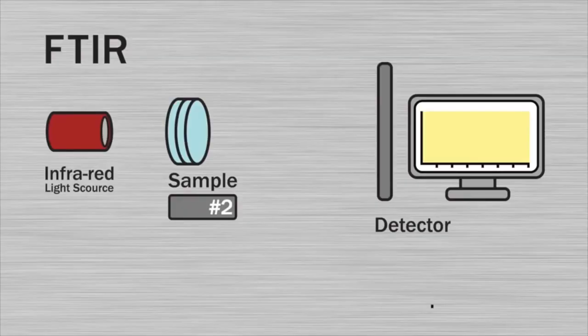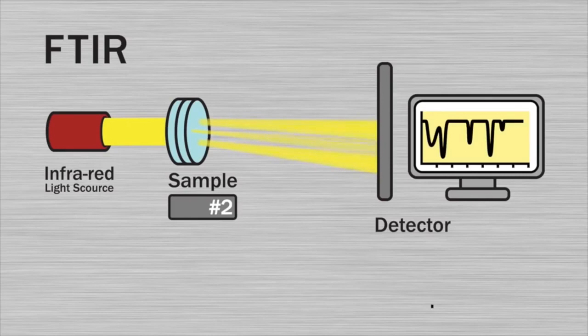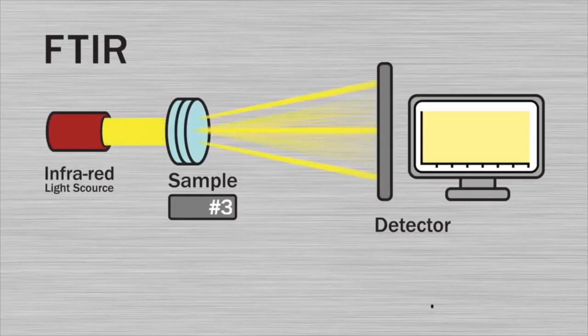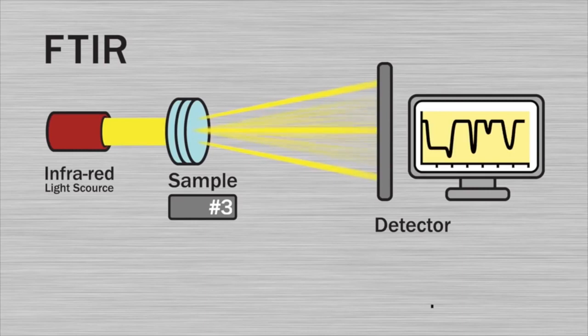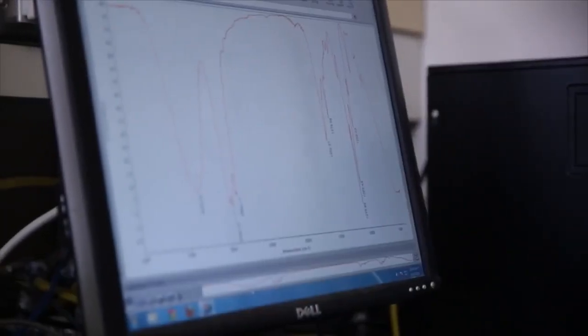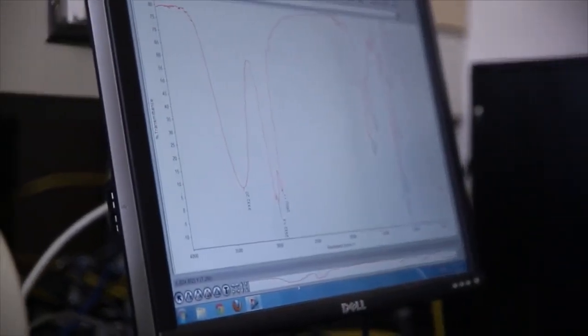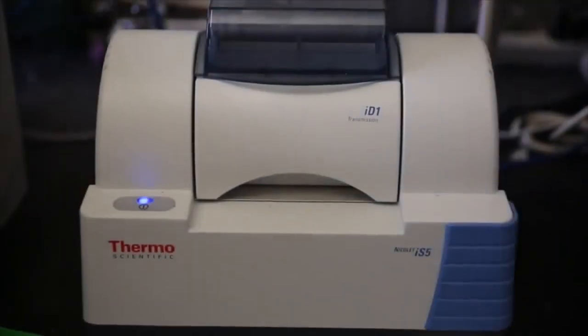Because each essential oil has unique chemistry, the absorption pattern will be different for each oil. The pattern can also vary depending on the quality of the oil. This test is used to analyze the composition of an essential oil and ensure that it contains proper chemistry.